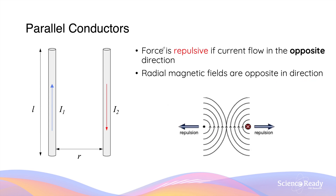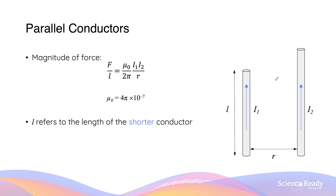Conversely, the force between the two conductors is repulsive if the currents flow in opposite directions, as the radial magnetic fields produced are also in opposite directions. When given a scenario with two parallel straight conductors of unequal lengths, the length in the equation always refers to the shorter conductor's length. So regardless of how long the longer conductor is, the magnitude of the force is always determined by the shorter conductor's length.